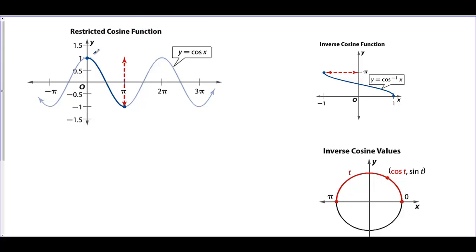Restricted cosine function. This one also fails the horizontal line test, so its inverse is not a function. To get both positive and negative values, we go from 0 to pi. For the inverse, we switch x and y: the y value goes from negative 1 to 1, so now the x value goes from negative 1 to 1, and on the y-axis we go from 0 to pi. On the unit circle that is quadrant 1 and quadrant 2 — those are the principal quadrants for inverse cosine.